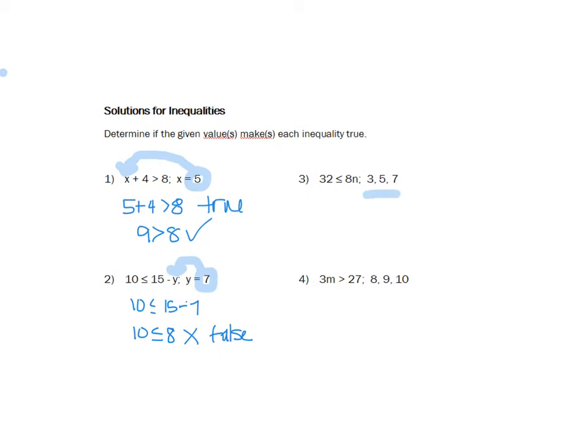Over here, it gives me a string of numbers that I'm going to substitute in. It's the same process, I'm just going to have three problems. Here it tells me that 32 is less than or equal to 8n. I'm going to substitute in times 3, which is my first value. 32 is less than or equal to 8 times 3 is 24. That one is false.